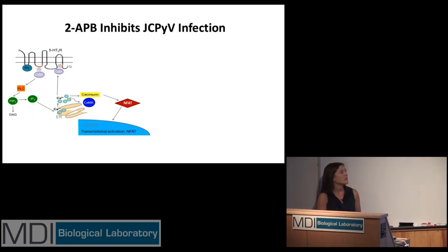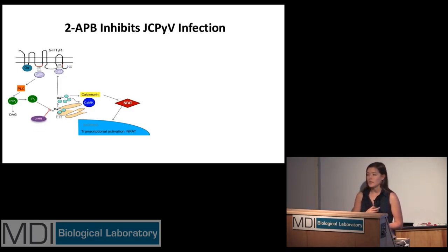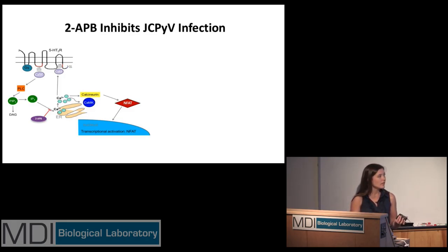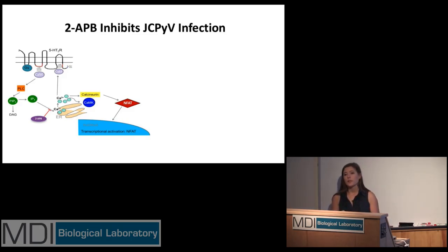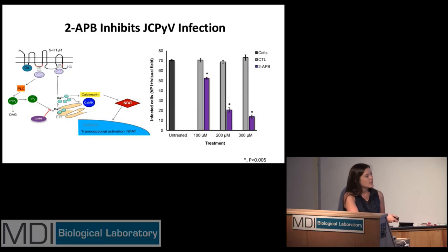Looking at the schematic, it appeared that calcium is a major regulator within JC infection; however, there was no preliminary data to examine this. So I started by pre-treating cells with a chemical called 2-APB, which specifically inhibits IP3 from interacting with its IP3 receptors, thereby hindering calcium flux within the cell and all subsequent pathways. After this pre-treatment, cells were infected with the virus, allowed to incubate, and then quantified for positive VP1 expression within the nucleus. As you can see on the right, as we increase the concentration of 2-APB we see a severe inhibition of JC's ability to replicate VP1 within the nucleus.